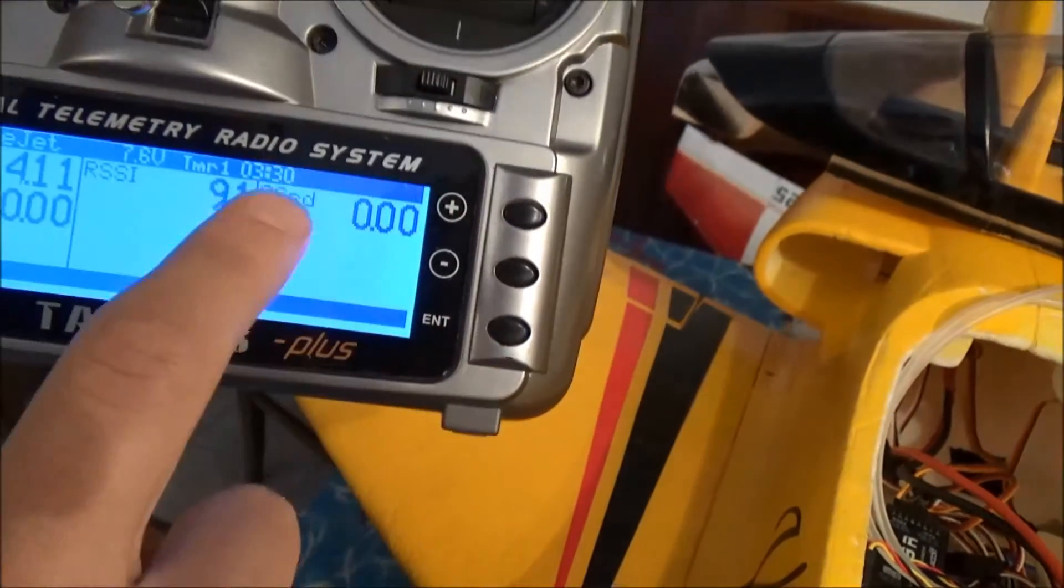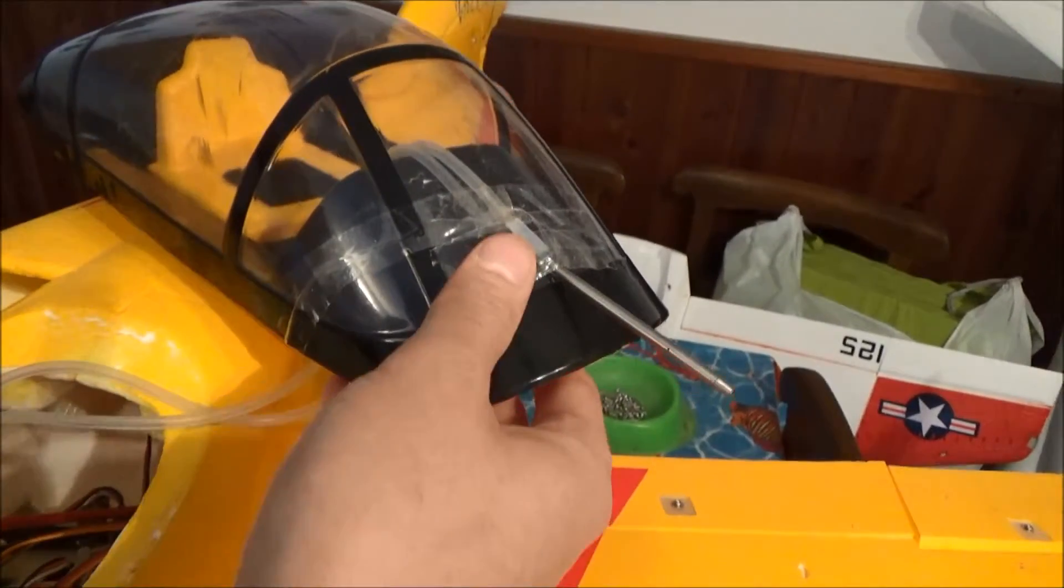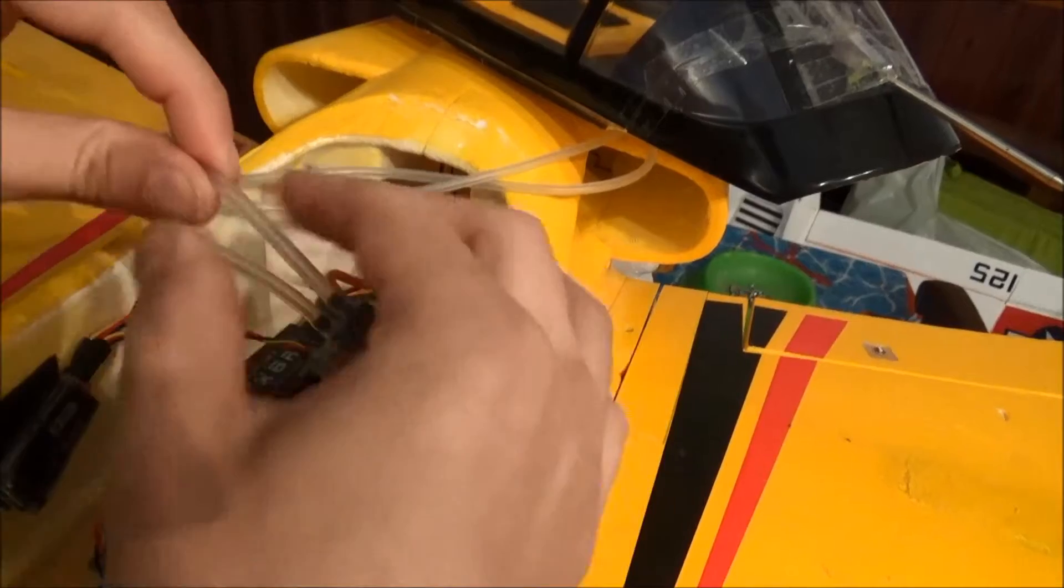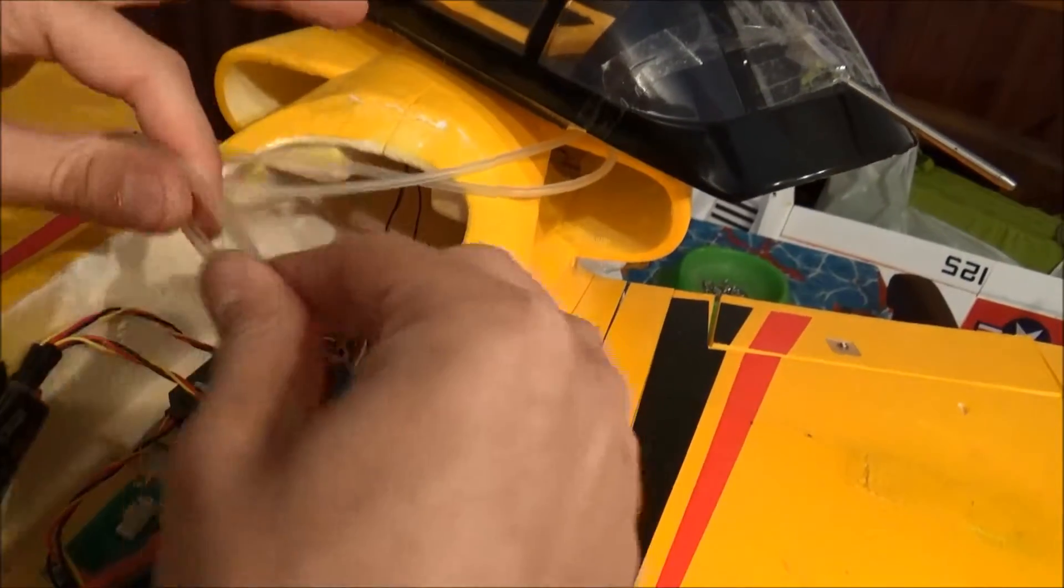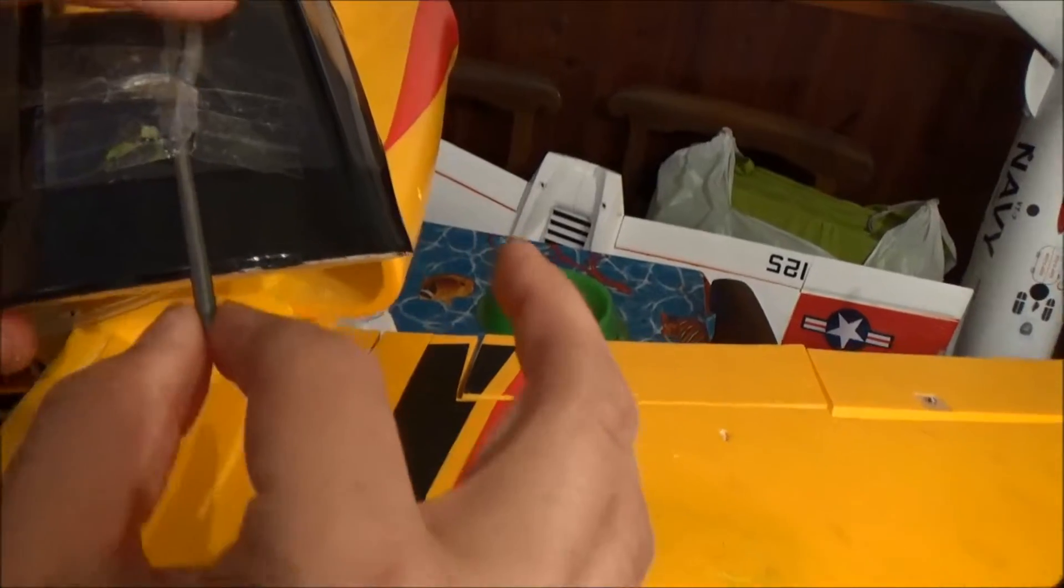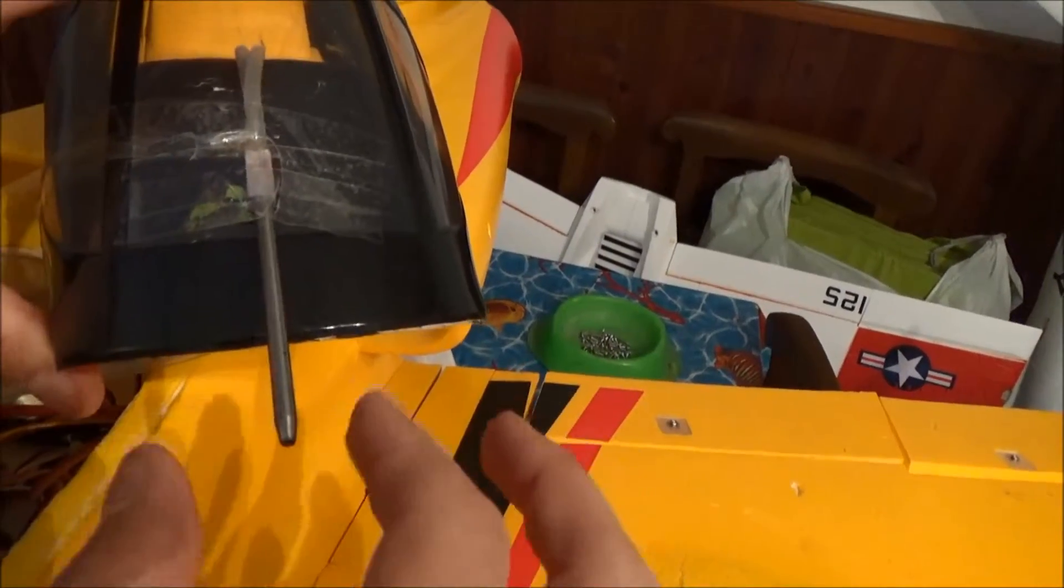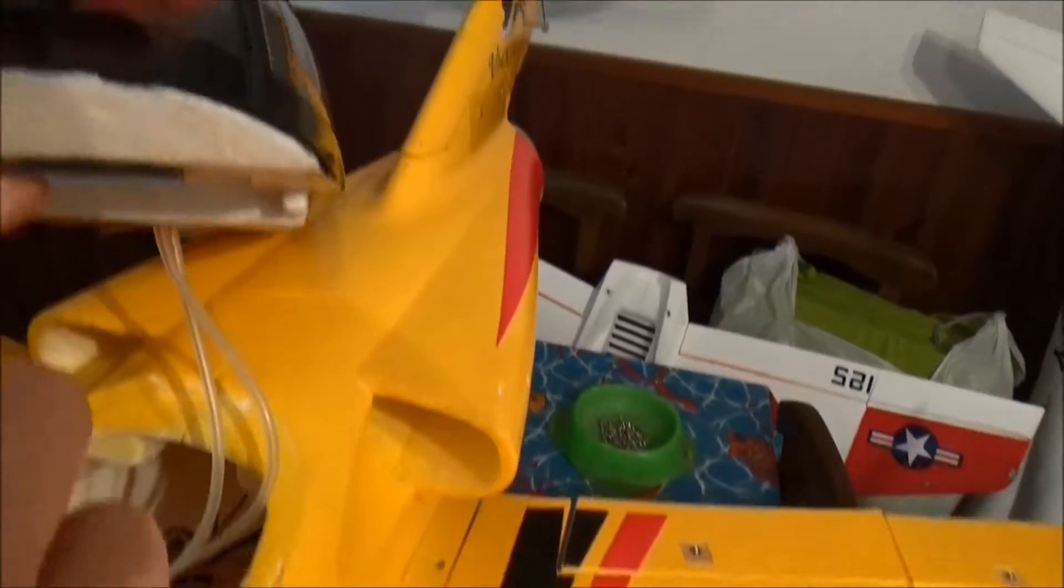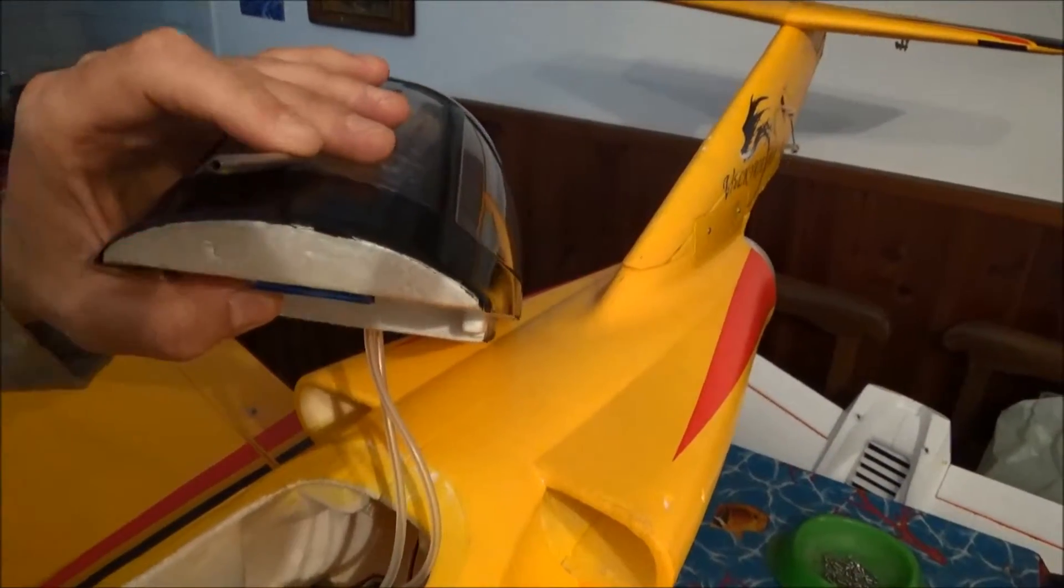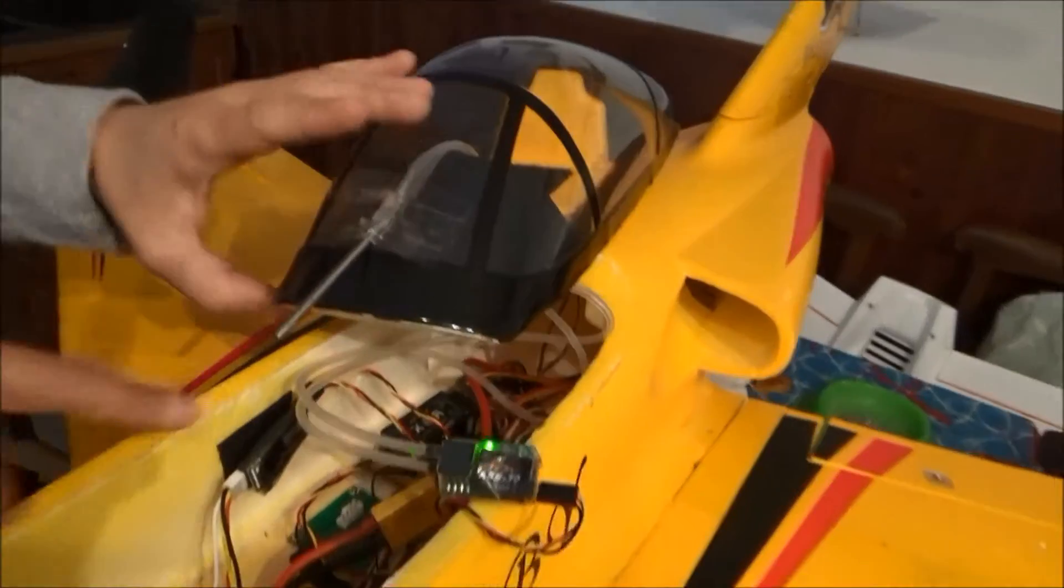You have simply to cut in half this silicon tube and connect it to this pitot tube. Automatically when the air goes inside here, you have it directly to your receiver and then to the transmitter.